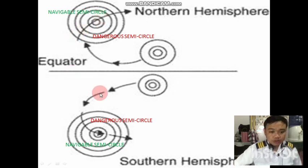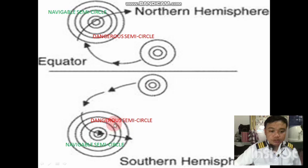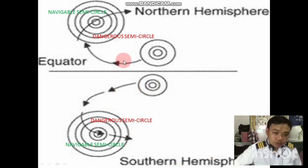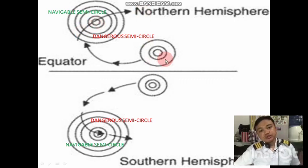In the southern hemisphere, the dangerous semicircle is on the left side of the storm and the navigable semicircle is on the right side. Please take note that the direction of the tropical cyclone's track in the southern hemisphere goes from south-southwest to southeast, while for the northern hemisphere it goes from northwest to northeast.